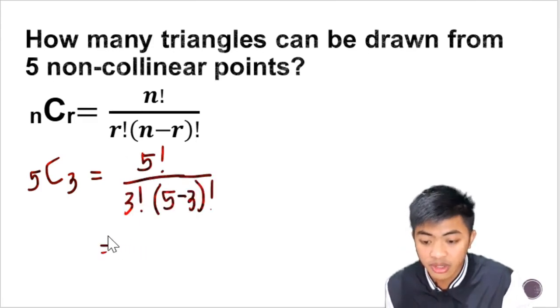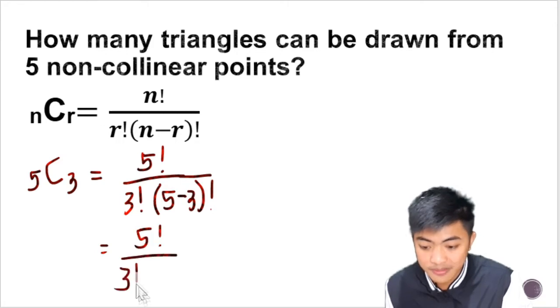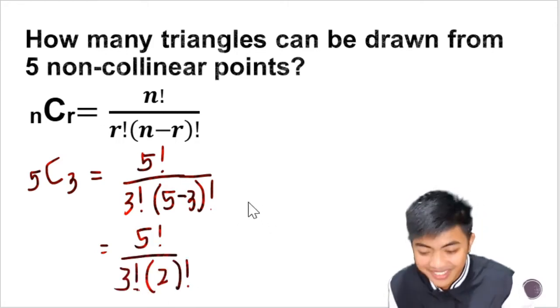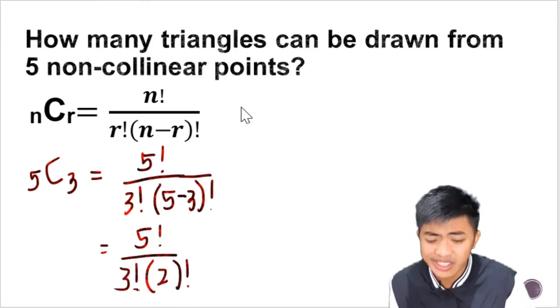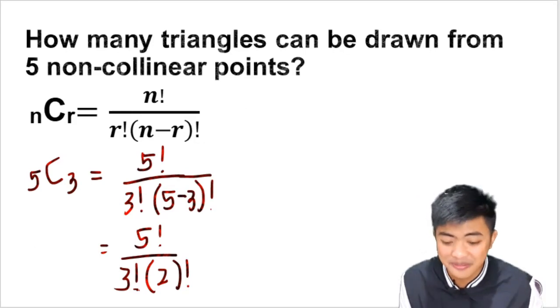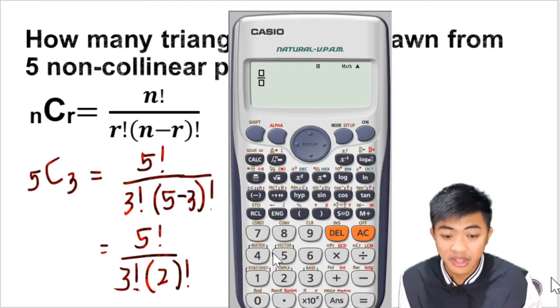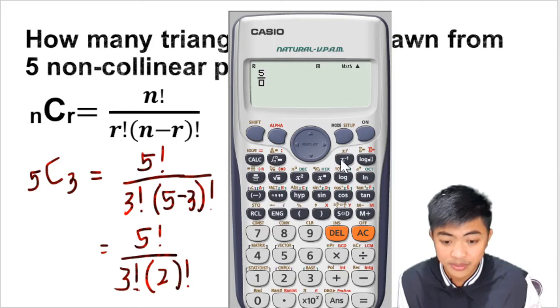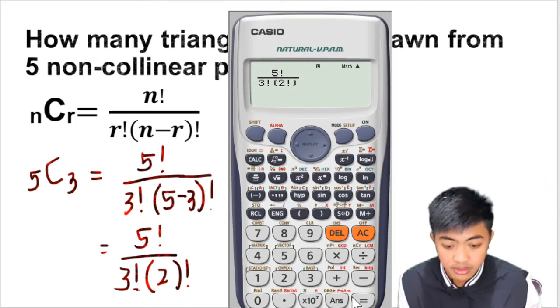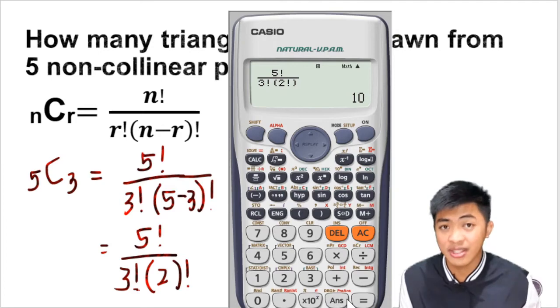So we're going to substitute five and three in the formula. Let's just input it in the calculator. That's five factorial in the numerator. And so imagine that guys, you can draw 10 triangles from five non-collinear points.